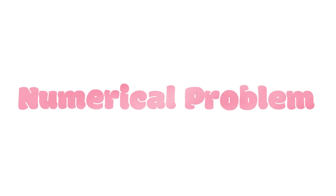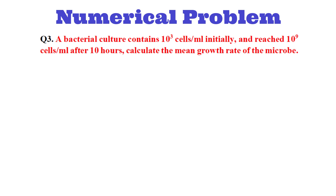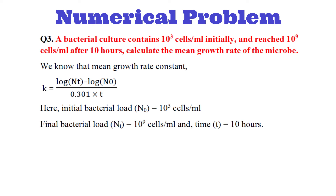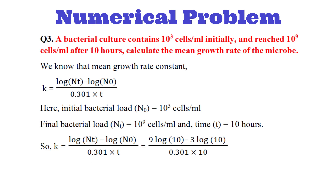Let's solve another numerical problem. A bacterial culture contains 10³ cells per ml initially and reached 10⁹ cells per ml after 10 hours. Calculate the mean growth rate constant. Using our equation: initial bacterial load is 10³ cells per ml (3 log 10) and final bacterial load is 10⁹ cells per ml (9 log 10), and time t is 10 hours. So k = (9 − 3) / (0.301 × 10) = 6 / 3.01 ≈ 1.99, or roughly 2 generations per hour.